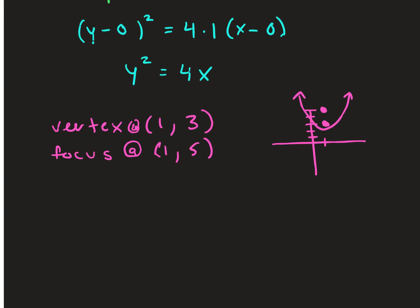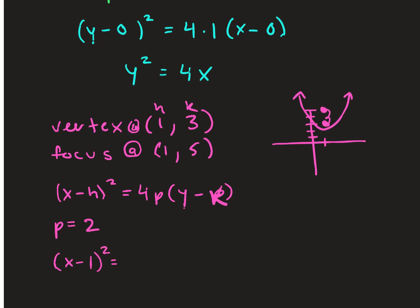Since it opens up we use the equation (x − h)² = 4p(y − k). Our vertex is (1, 3), so h = 1 and k = 3. The distance from the vertex to the focus is 2, so p = 2. Plugging in: (x − 1)² = 4(2)(y − 3), giving us (x − 1)² = 8(y − 3). This is our equation of the parabola.